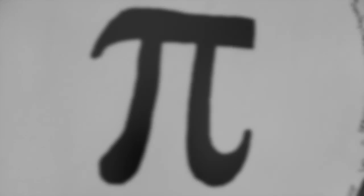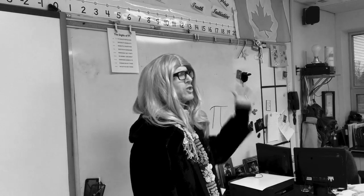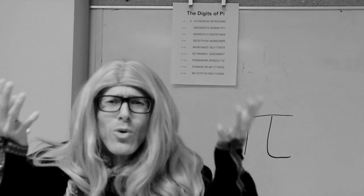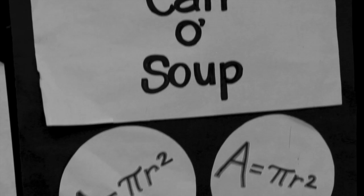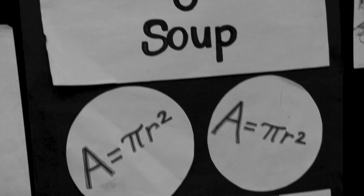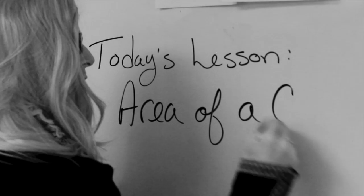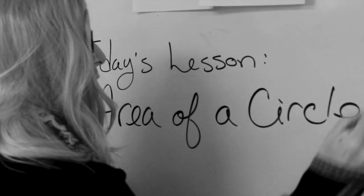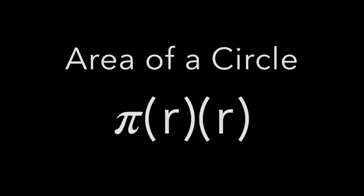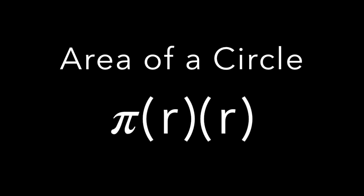Hello? Can you hear me? There's a test tomorrow. You still don't know the formula. Why do I try? Do you care? The formula for a circle's area — it's pi r squared. There's no difference between that and pi times r times r.